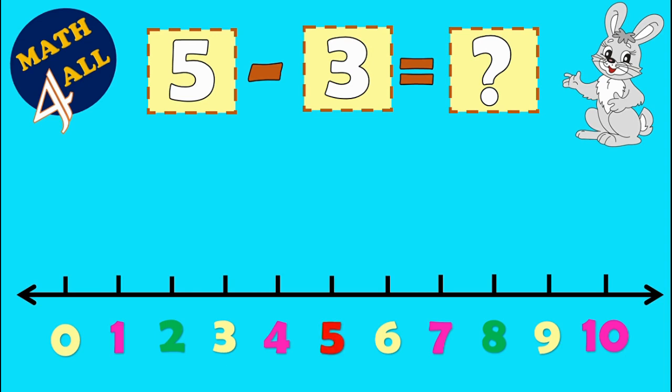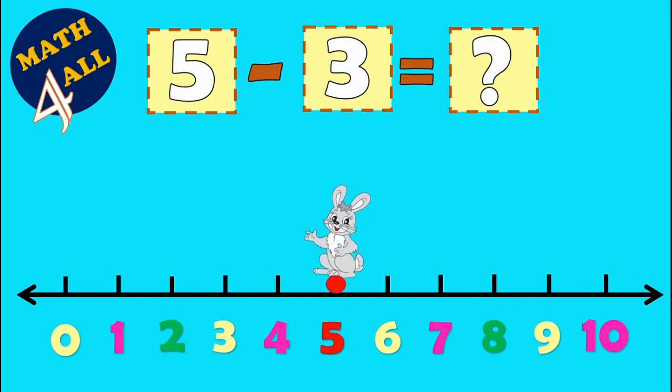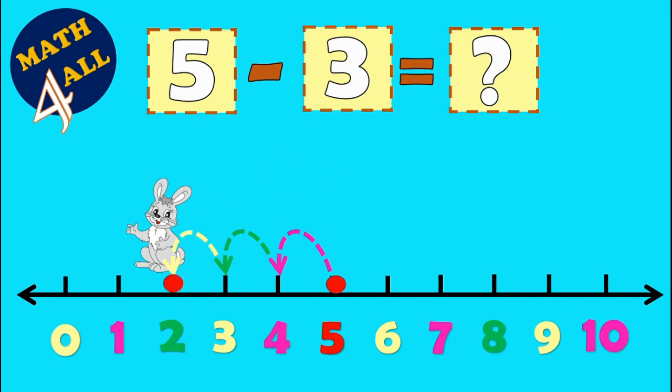Let's go. Then you will step backward 3 steps or 3 jumps. Let's jump 1, 2, and 3. Here Mr. Rabbit stops on 2, so that 5 minus 3 equals 2.